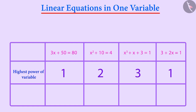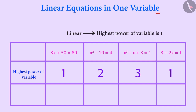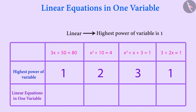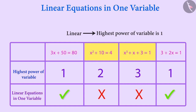An equation is called a linear equation in one variable when the highest power of its variable is 1. So, can you now tell which of these equations are linear equations in one variable? We see that both these equations are linear equations in one variable, and neither of these two are linear equations.